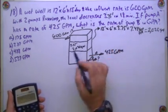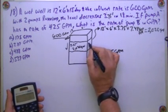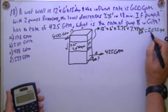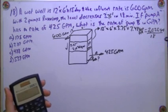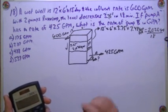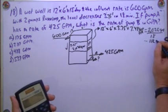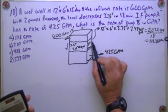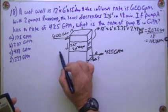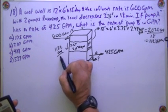2,020 gallons and it decreased in 18 minutes. So 2,020 divided by 18, that's going to give me 112.2 gallons GPM. So that decrease is equal to 112.2 gallons per minute.